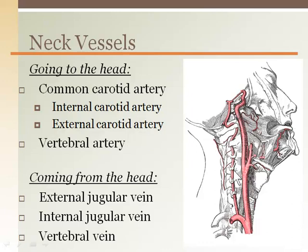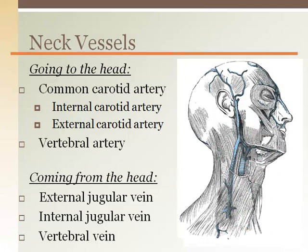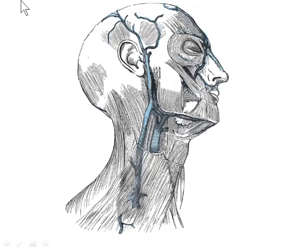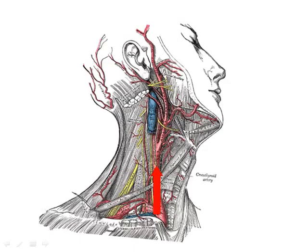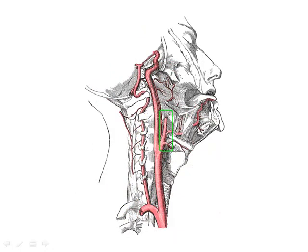After nutrient-waste exchange in the head, blood returns via the jugular veins. The internal jugular contains blood from the brain, the external jugular contains blood from the other parts of the head and face, and the vertebral vein in the transverse foramen of the cervical vertebrae also brings blood back from the brain. Veins are more superficial than arteries. Just under the platysma is the external jugular vein; deeper is the internal jugular vein; and deeper still is the common carotid artery, which bifurcates into the internal carotid artery to the brain and the external carotid artery to the face and skull.